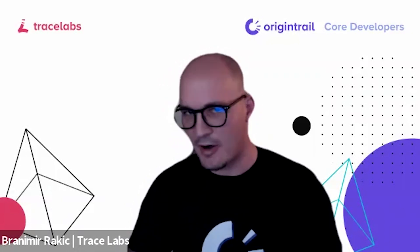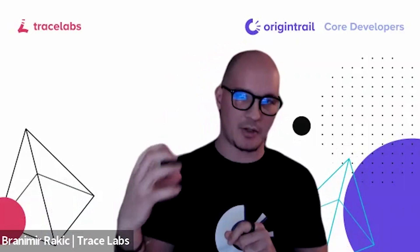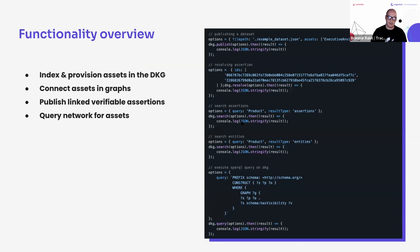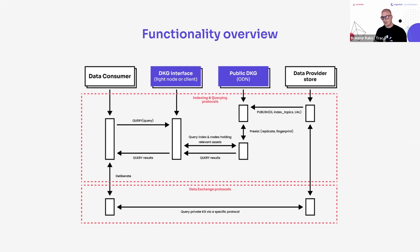On GDPR compliance: the DKG provides tools to be compliant. Unlike blockchain where putting privacy-sensitive data on-chain is irreversible, the DKG lets you set visibility. Public knowledge graph data stays public, but you can link it to private graphs that remain within your node's context. Data exchange protocols allow direct party exchanges at an access control level — this is where knowledge markets and TRAC tokens come into play.